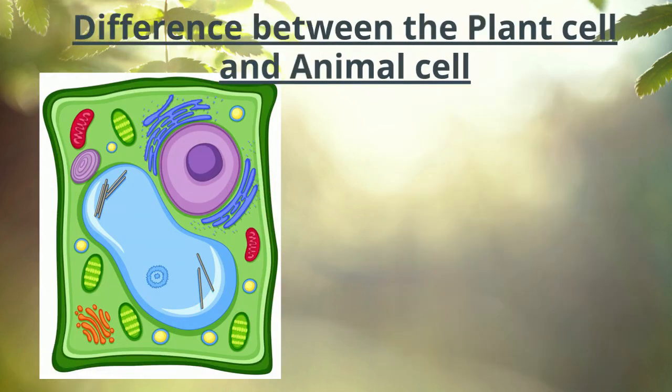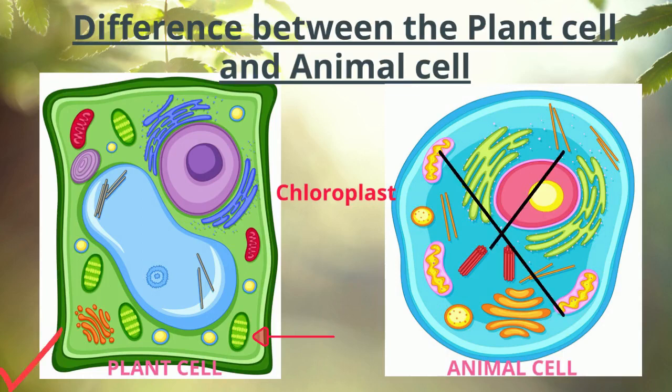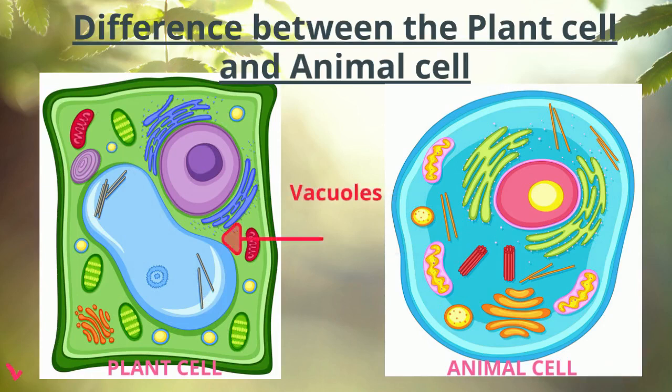Now let's differentiate the plant cell and animal cell. Cell wall is present in plant cell whereas cell wall is absent in animal cell. Chloroplast is present in plant cell. Chloroplast is absent in animal cell. Centrosome is absent in plant cell whereas centrosome is present in animal cell. Vacuoles are large and permanent in plant cell. Usually vacuoles are absent in animal cell and if present, they are small and temporary.